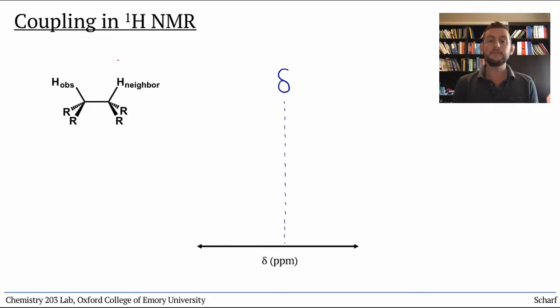The neighbor can have two possible spin states, either spin up, we'll call it plus, or spin down, minus. And these two possibilities each influence the observed proton's absorption frequency in equal and opposite ways.